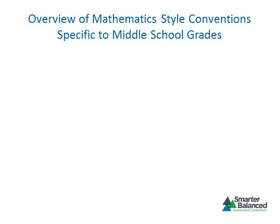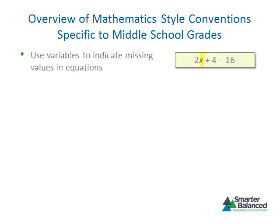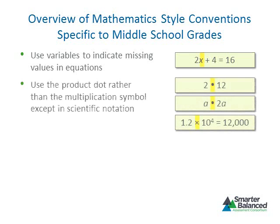Let's look at some mathematics style conventions specific to middle school grades. Use variables to indicate missing values in equations. For example, the x in the equation 2x + 4 = 16 represents the missing value of 6. Use the product dot rather than the multiplication symbol, as in the examples 2 · 12 and a · 2a.